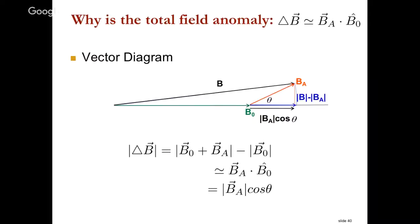Here's something I drew on the board the other day — another statement of how to understand the difference between the length of this vector, which is the sum of the Earth's field and the anomalous field, and subtracting from that this length, so you're left with something that is really just effectively the amplitude of the anomalous field projected onto the Earth's field direction. Or if you'd like to use the cosine rule, you can use that one.